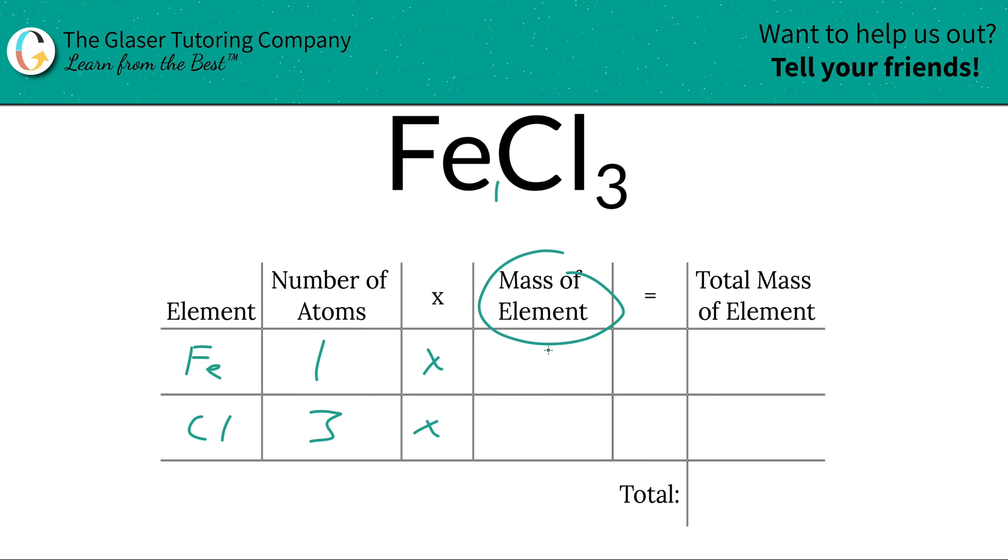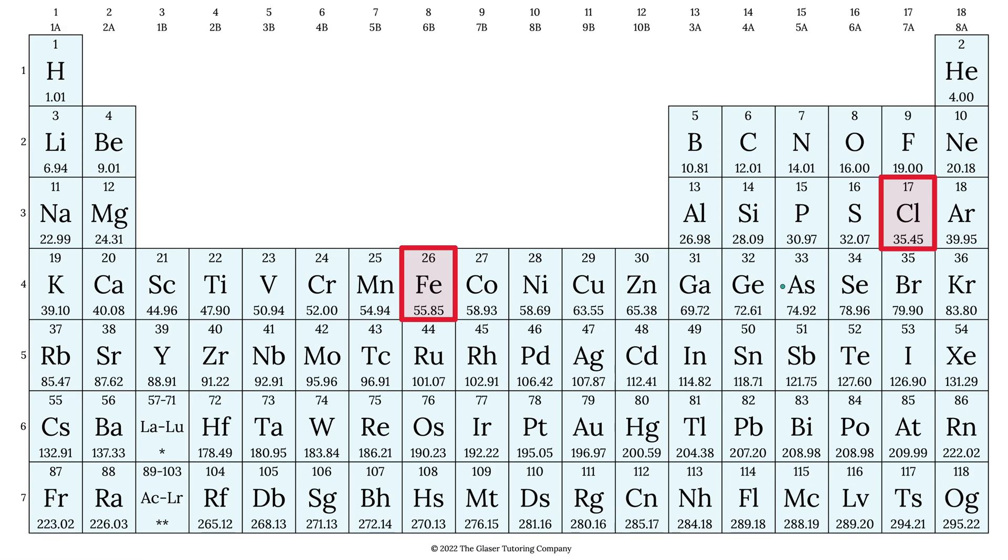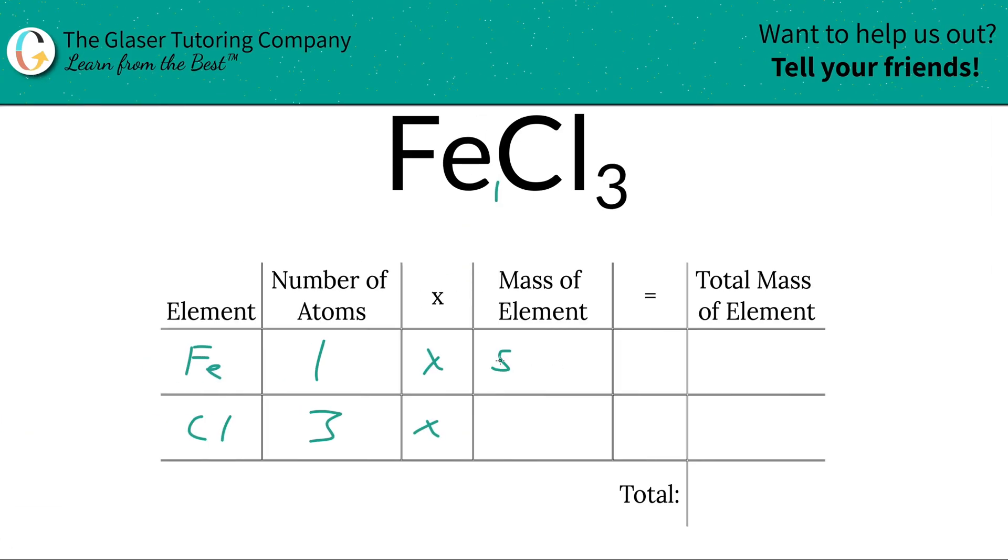Then you're going to take those number of atoms and multiply it by the mass of the element. These masses are found on the periodic table. Here's iron's mass 55.85 and here's chlorine 35.45. So that's what we're going to write in, 55.85 and then 35.45.